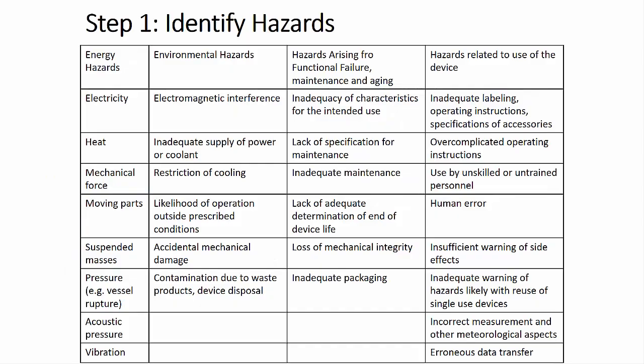Now that we've clarified our concept, we can start to identify hazards that might be associated with it. Hazards in this usage are considered high-level areas of concern, so rather than identifying that part X might get hot, we'll start out by just noting that there may be heat hazards in this device during this step. You can brainstorm possible hazards, use a list of common hazards like the one shown, or some combination of the two.